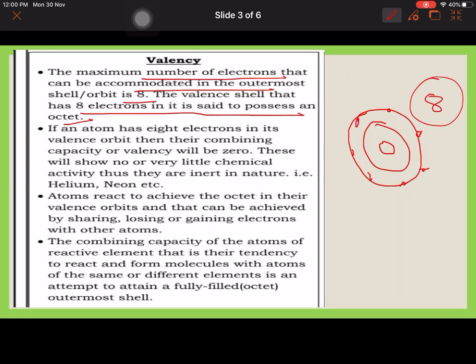If the element is having 8 electrons, it is said to be having the complete octet. If an atom has 8 electrons in its valence orbit, then the combining capacity or valency will be 0. This means that the outermost shell has 8 electrons.